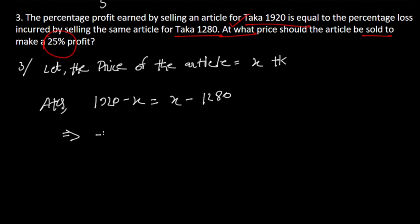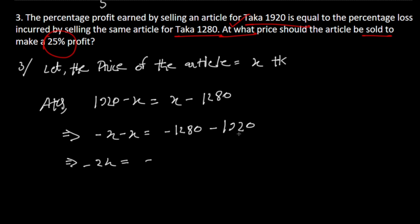Setting up the equation: minus x equals minus 1280 minus 1920. Then 2x equals minus x, so x equals 1600. The cost price is 1600.